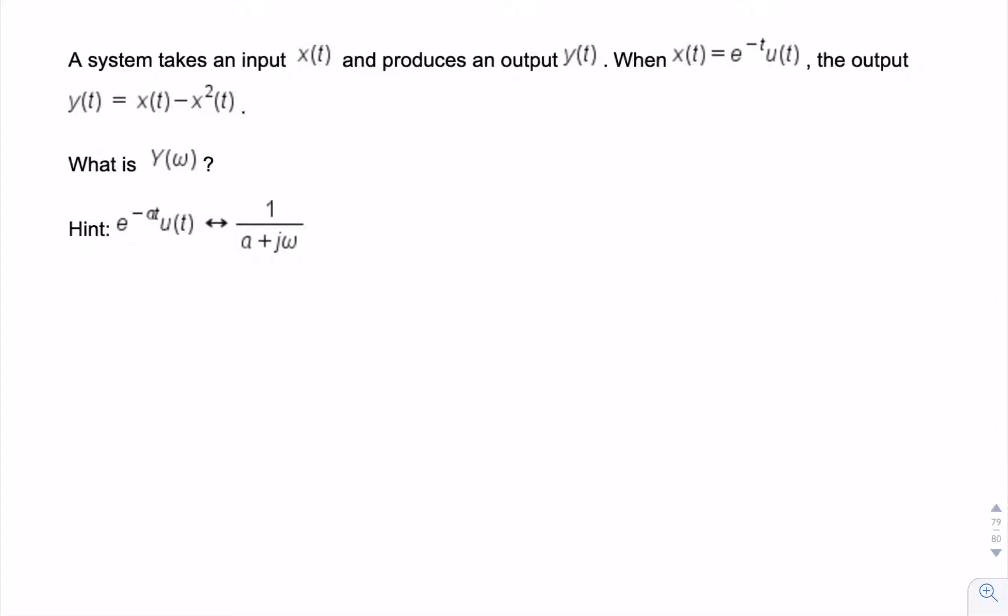In this question, we have a system with an input and an output. The output is related to the input in the following way, and we're given the input signal e^(-t)u(t), which is a single-sided exponential. We're asked to find the output in the frequency domain.